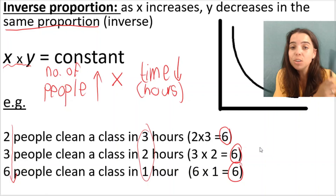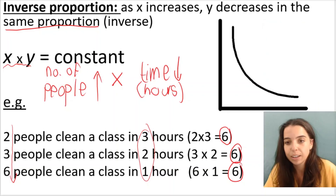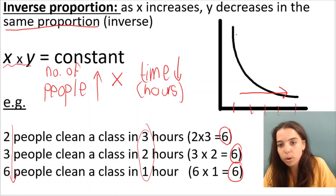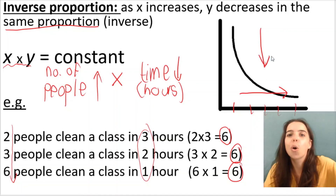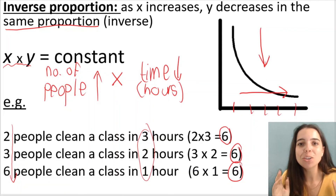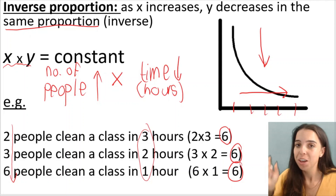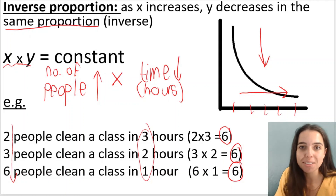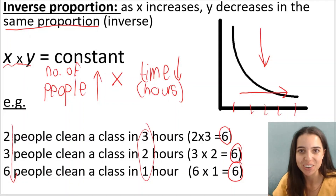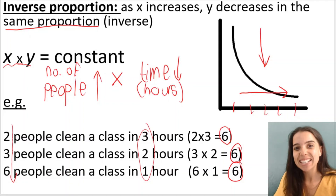Represented on a graph, it looks like this. As my one variable goes up — imagine increasing on this axis — what's happening to my other variable? It's going down. In the next video, we're going to go over two examples that you can try yourself. If you like this video, please give me a thumbs up. Don't forget to subscribe to this channel — there'll be loads more videos. See you guys in the next one.